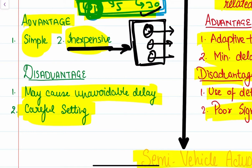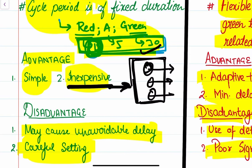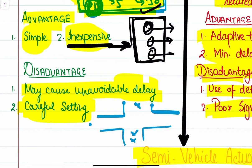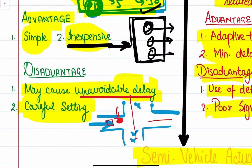In fixed type, since we have a fixed cycle time for each light, unavoidable delay can occur. For example, at night around 2 or 3 a.m. where there is little to no traffic, if you are the only vehicle passing a section and there is a red light for a certain period of time, you still have to wait even though you can observe there is no other traffic on the road. This unavoidable delay is a common scenario in fixed-type traffic signals.